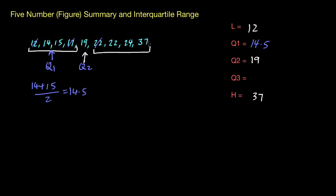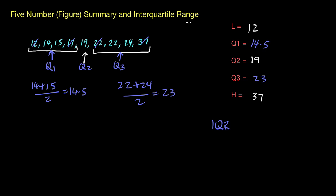For Q3, we ignore the outer numbers and count in until we hit the middle two numbers — that's 22 and 24. To find the middle of 22 and 24, add them together and divide by 2, which gives us 23. So Q3 is 23. Now for the IQR: Q3 take away Q1, so 23 take away 14.5 gives you 8.5. There's your interquartile range.